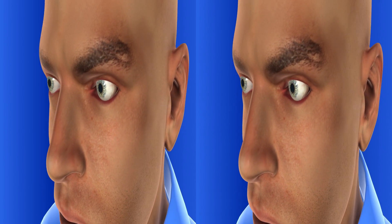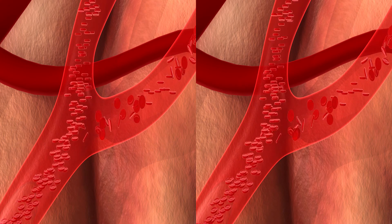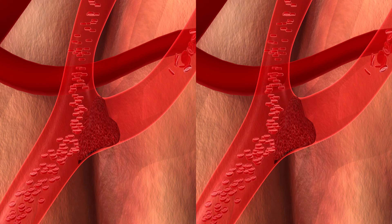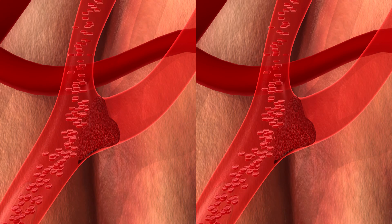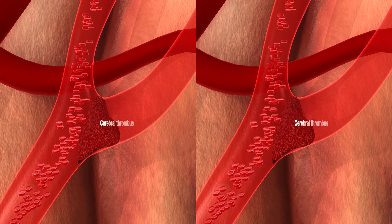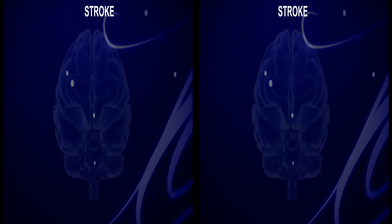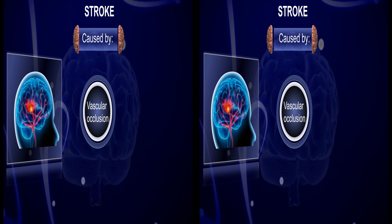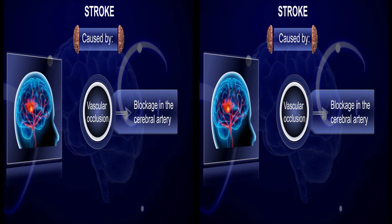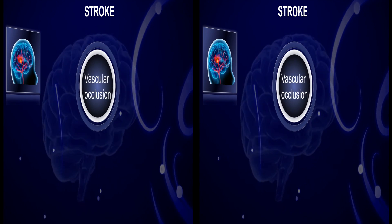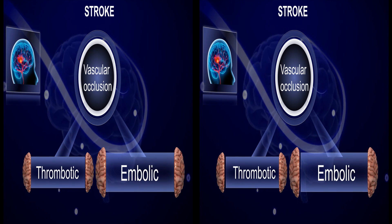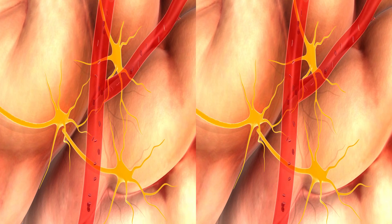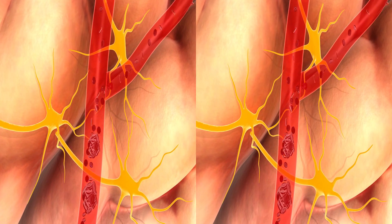Despite the presence of factors including coagulation of blood within the vessels, clotting may occur. At times such clots are formed in veins rather than in arteries. A clot in the cerebral vessel is called a stroke or cerebral thrombus. Stroke can be caused by vascular occlusion, which means blockage in the cerebral artery. Vascular occlusion is of two types: thrombotic and embolic.